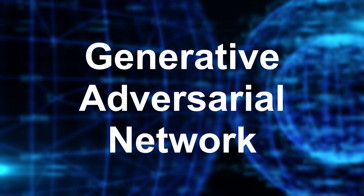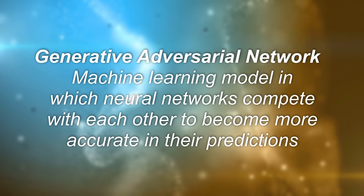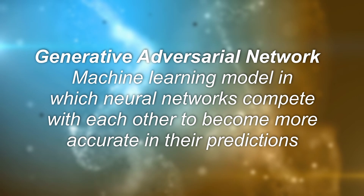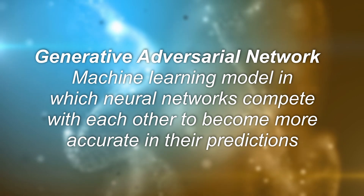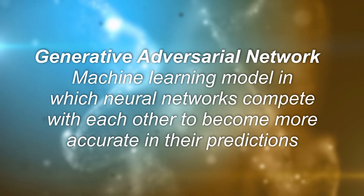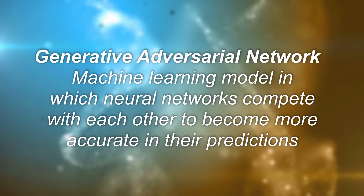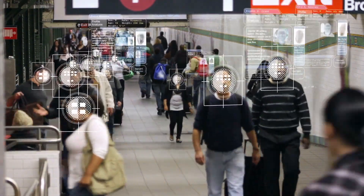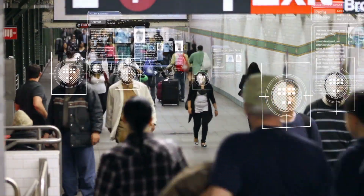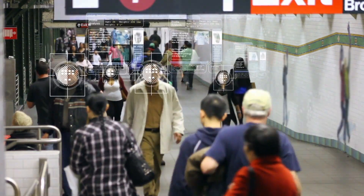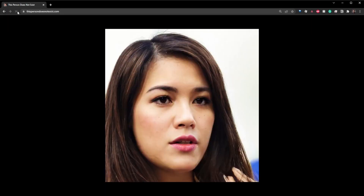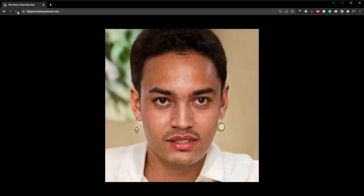A GAN, or Generative Adversarial Network, is a generative model of neural networks, which means that it can create or generate a new data instance that resembles the training data. Using our face example, we can train our model on human faces, and then ask the model to generate a brand new face that doesn't actually exist, as is the case with thispersondoesnotexist.com, which generates faces of people that do not exist.